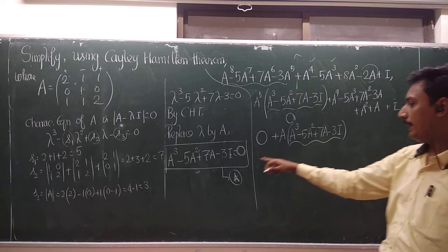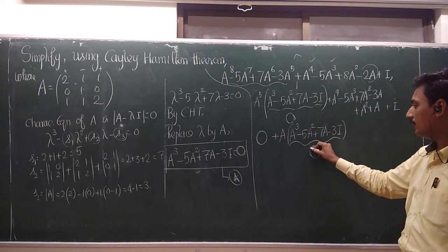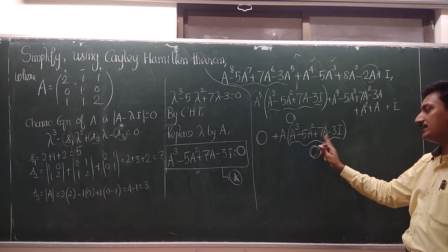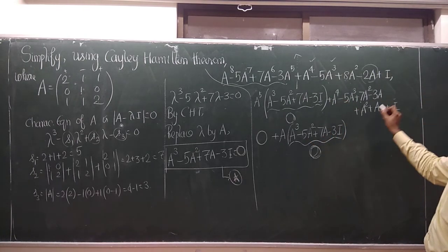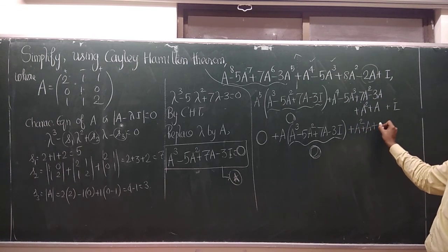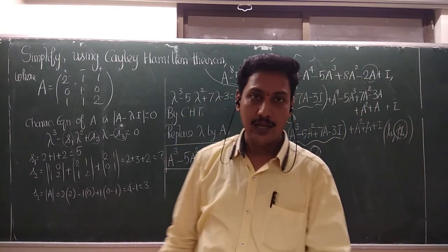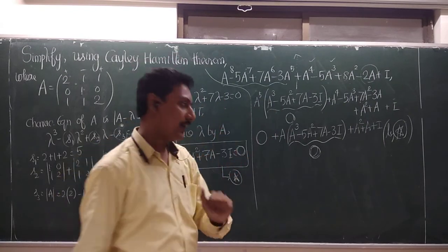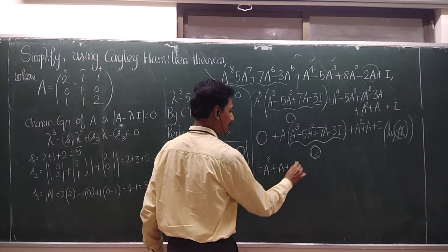So once again, what is the value for this one? By using the star equation, this is nothing but 0. So A cube minus 5A square plus 7A minus I is 0. So once again, this is also 0. So what is the balance? The balance is A square plus A plus I. So by the star equation, this expression, very lengthy expression can be simplified into finally A square plus A plus I.